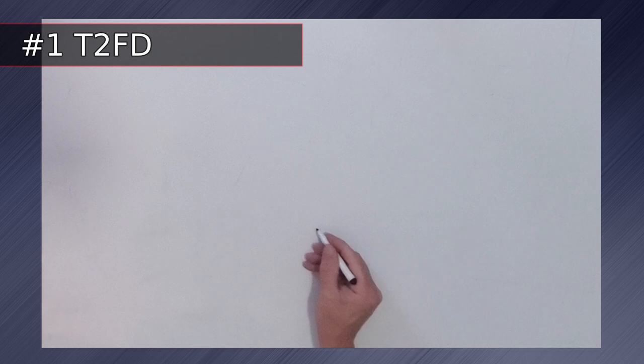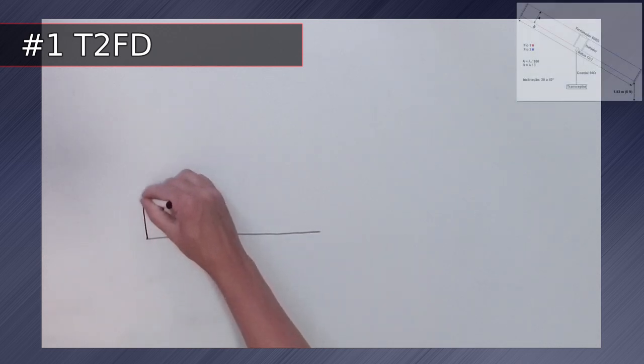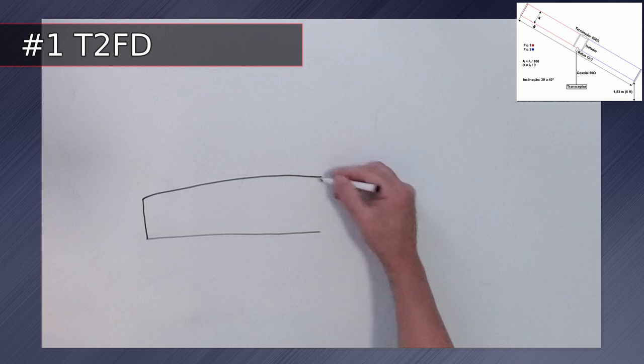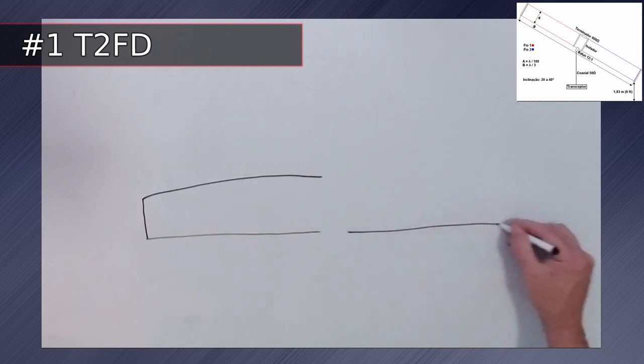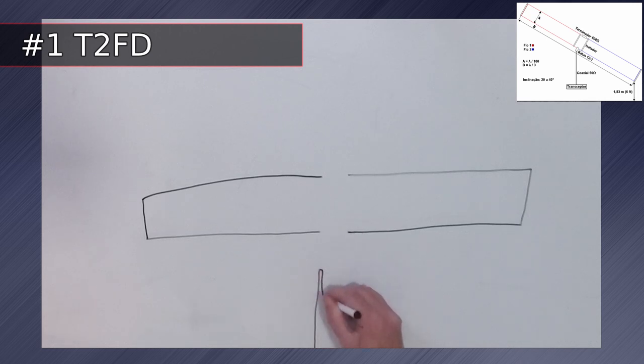And at number 1 on the list is the terminated folded dipole. Developed in the 40s by the Navy, this antenna takes the top spot for its all-around performance and low noise floor. It is a great performer in high noise urban areas, and some even claim insensitive to man-made radio interference.